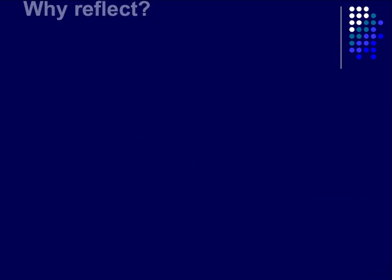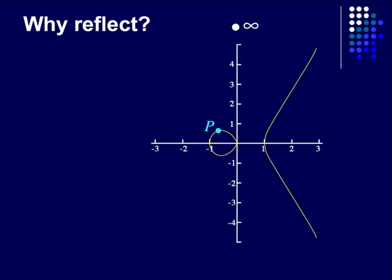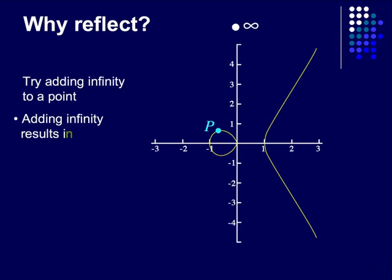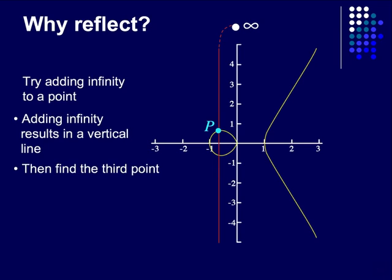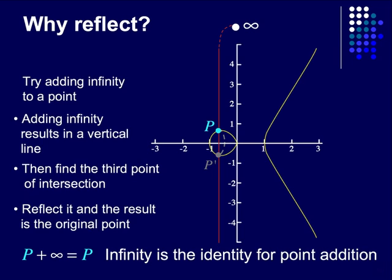But why do we reflect? Well, if we take a point on the curve and then try adding infinity to that point, we get a vertical line between that point and infinity. The third point of intersection will then be the reflection of the original point. And when you reflect a reflection, you get back the original point. Thus, a point plus infinity is the original point, making infinity the identity for point addition.